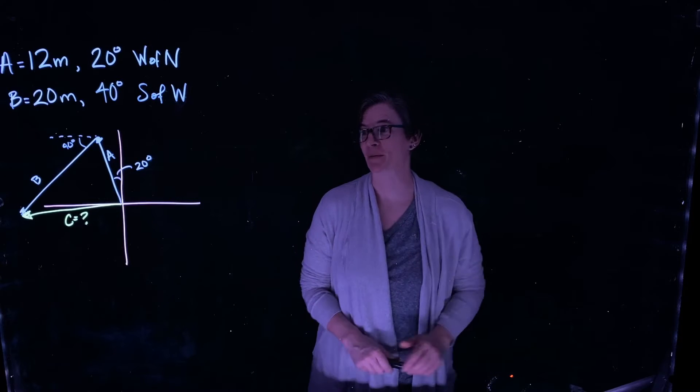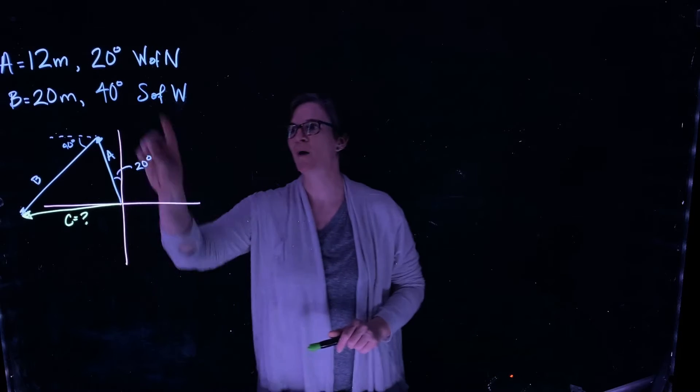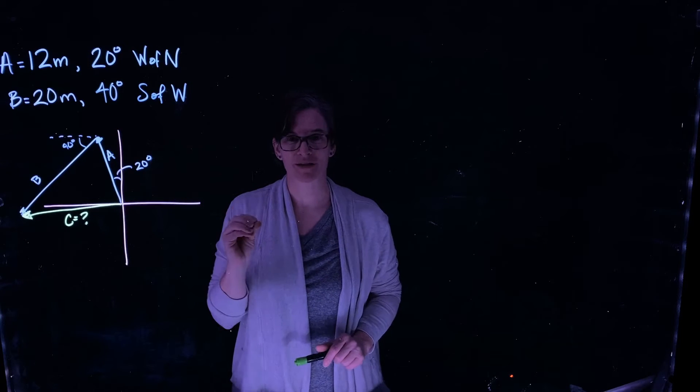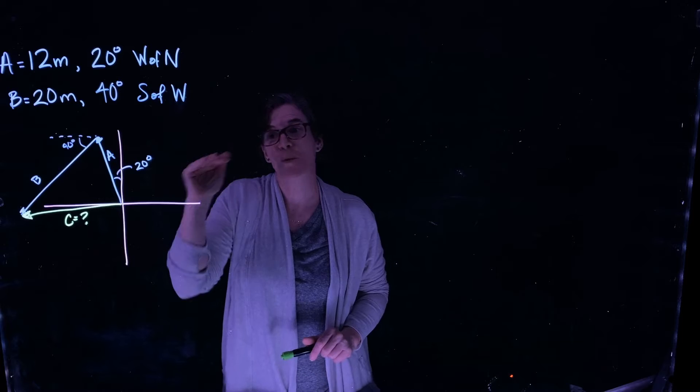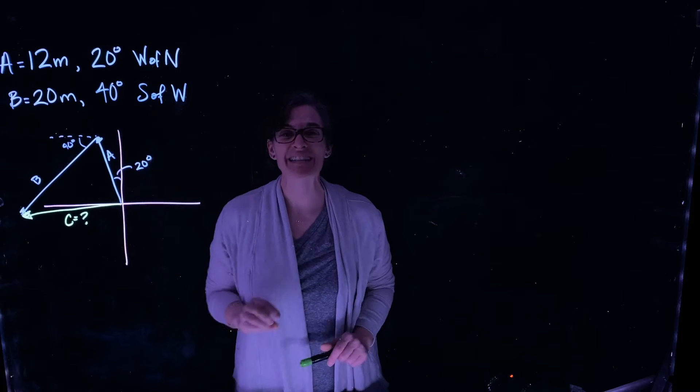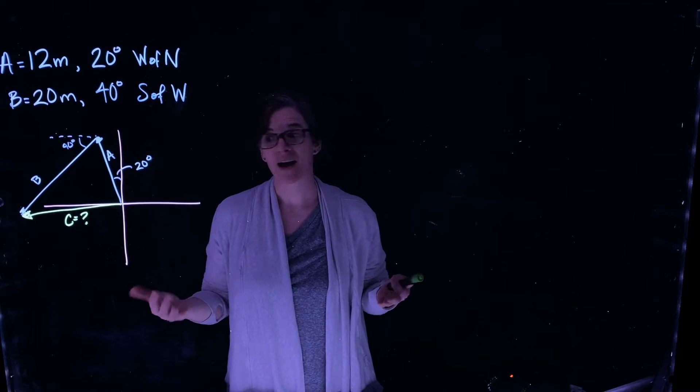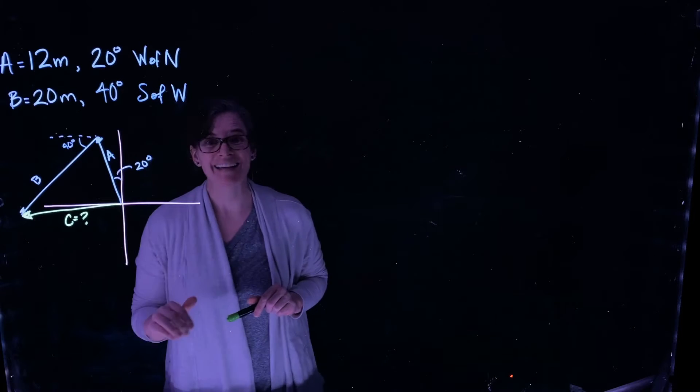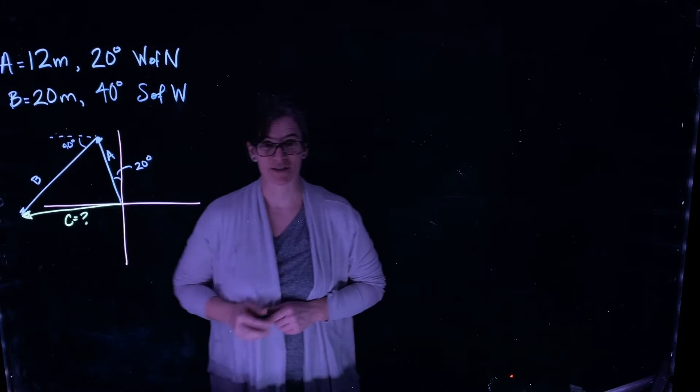Okay, so we have a problem. Suppose that you walk 12 meters, 20 degrees west of north. You then turn and walk 20 meters, 40 degrees south of west. Where do you end up relative to your starting position, including the angle relative to your starting position?